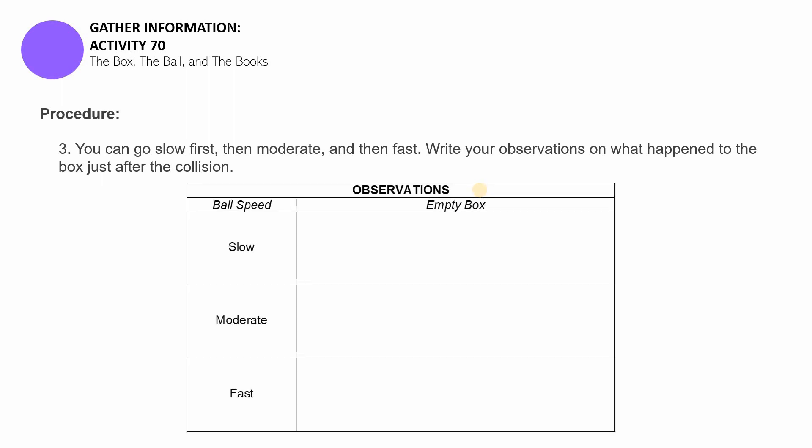You have to record all of your observations. All right. You'll be using as well this table in recording your observations. So, when it was empty and the ball was slow, what are your observations? When the ball was moderate speed, what happened to the empty box after collision? And then, when the ball was fast, what happened to the empty box after the collision?